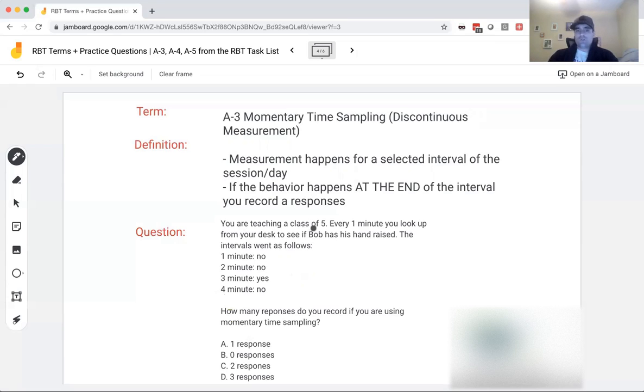So question. You are teaching a class of five. Every one minute, you look up from your desk to see if Bob has his hand raised. The intervals went as follows. So you're at your desk. Every one minute, you look up to see if Bob has his hand raised. So the end of your intervals at every one minute, if the behavior is happening at that time, you record it. Let's see. First minute, no. Second minute, no. Third minute, yes, hand was raised at that time. Fourth minute, no.